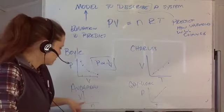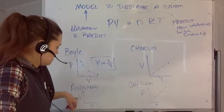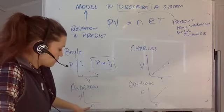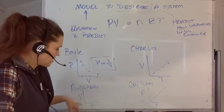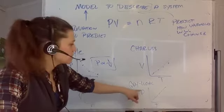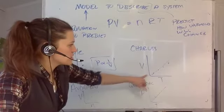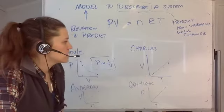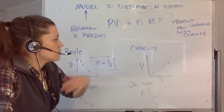And so they figured out that as the number of moles, or the quantity of the gas changed, the volume changed. As the temperature increased, the pressure increased. As the temperature increased, the volume increased.